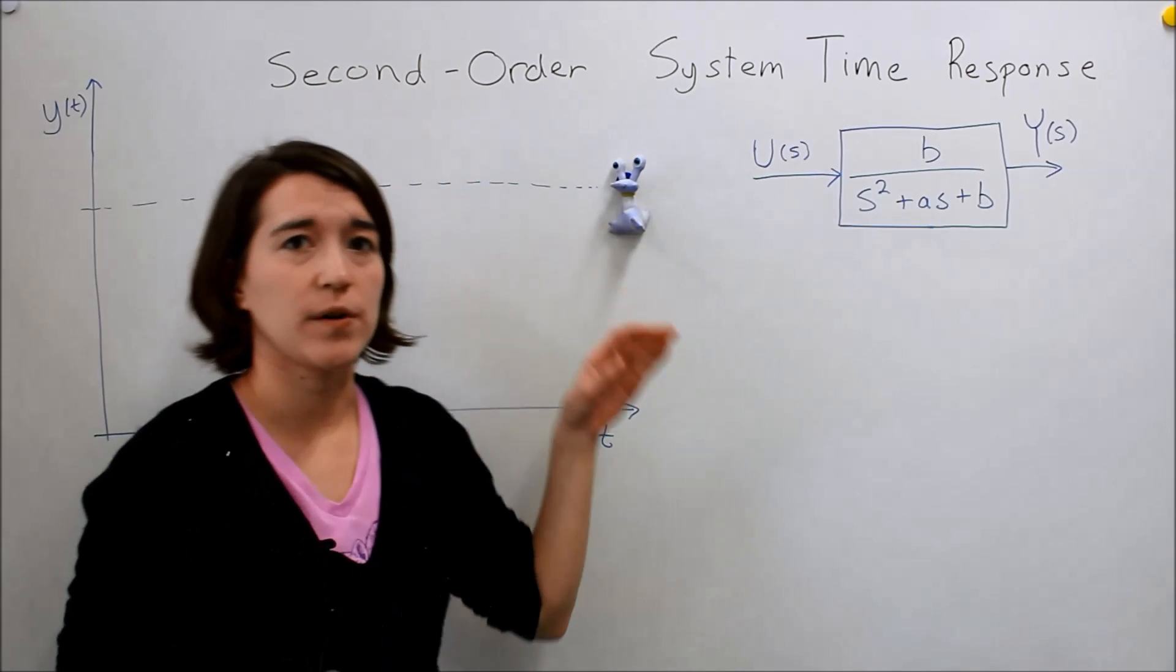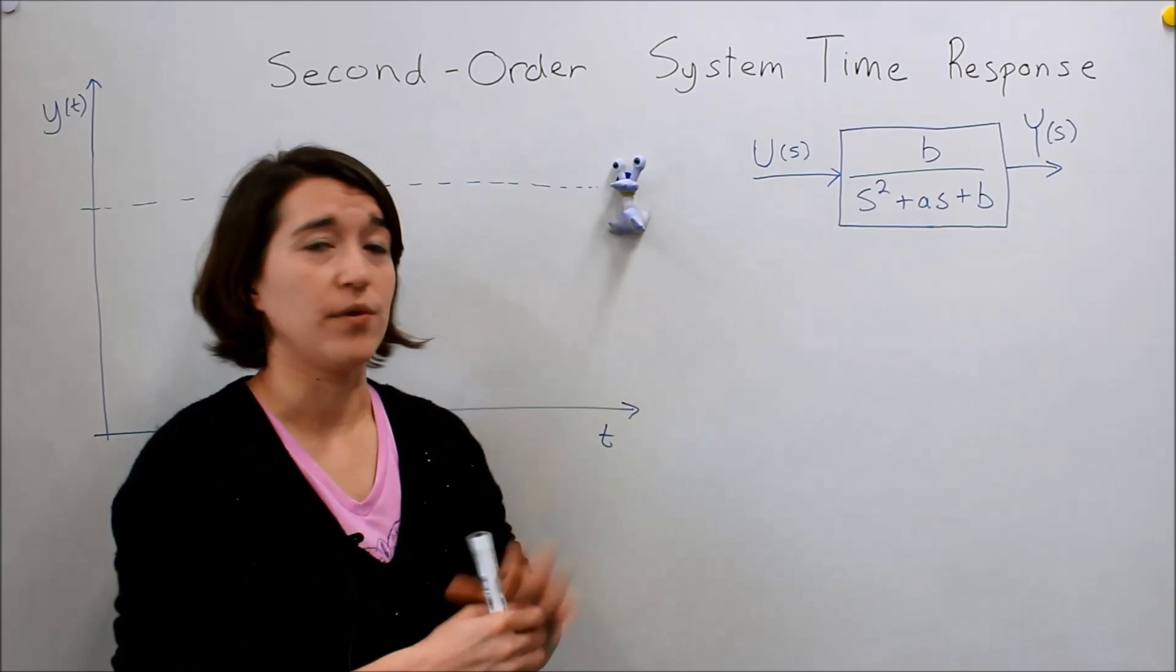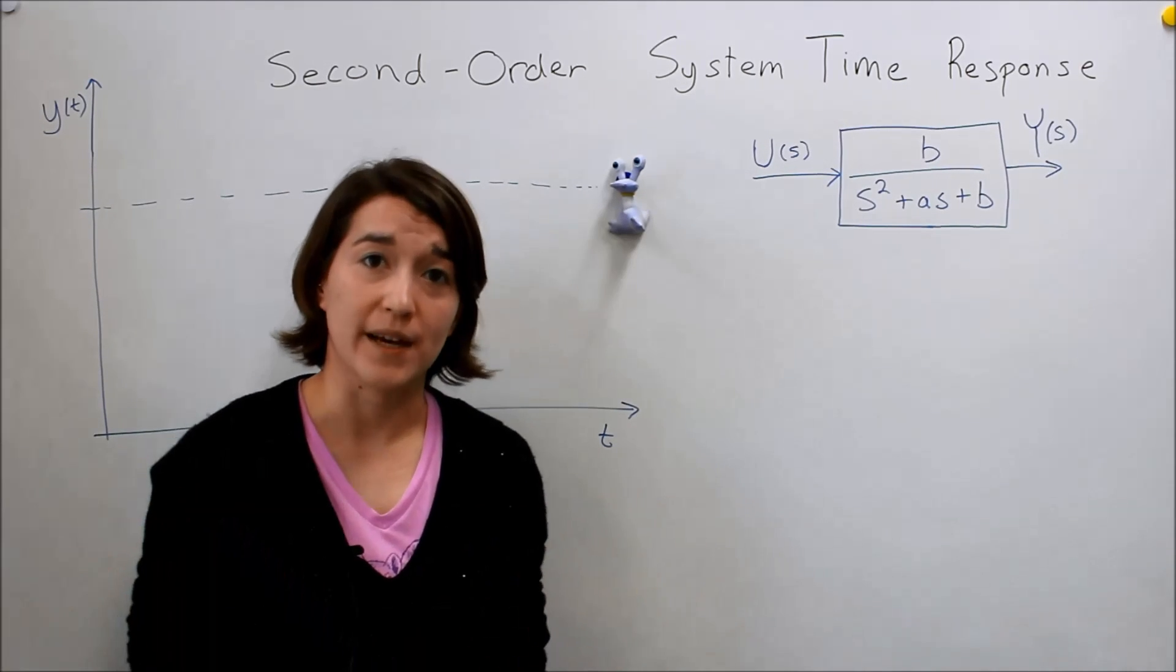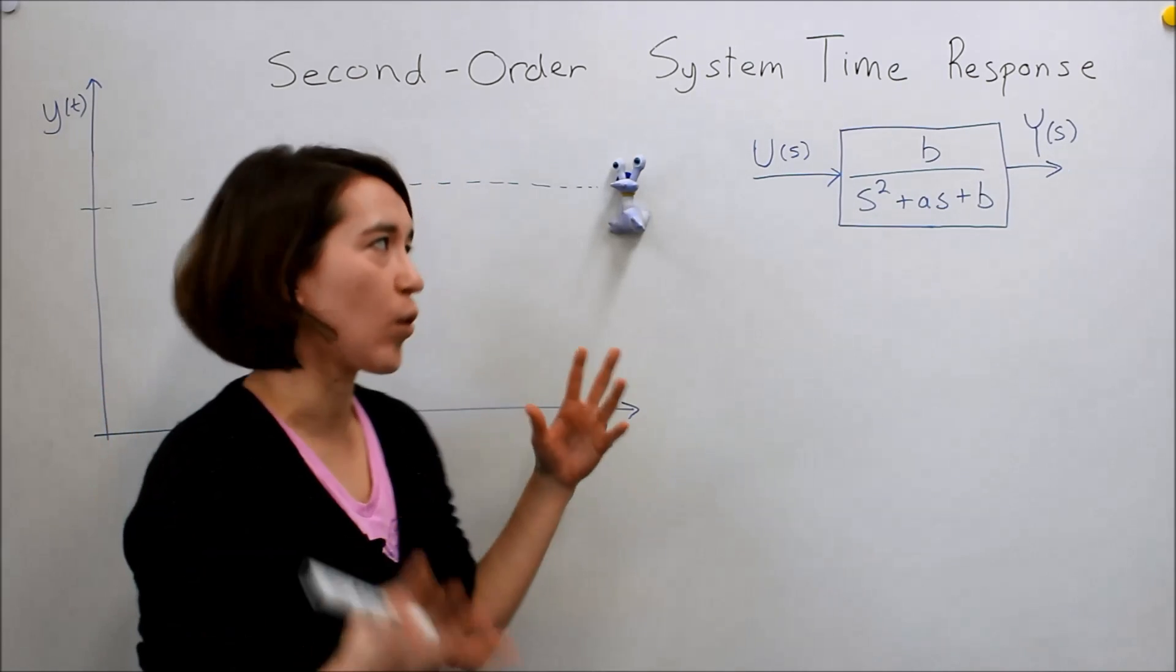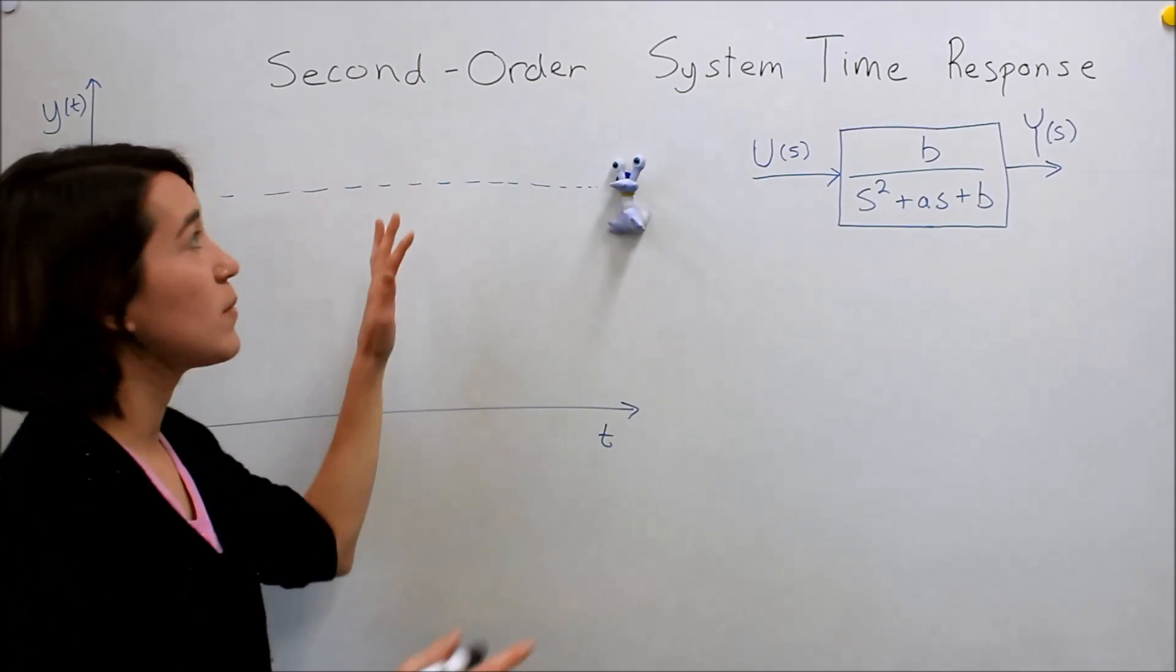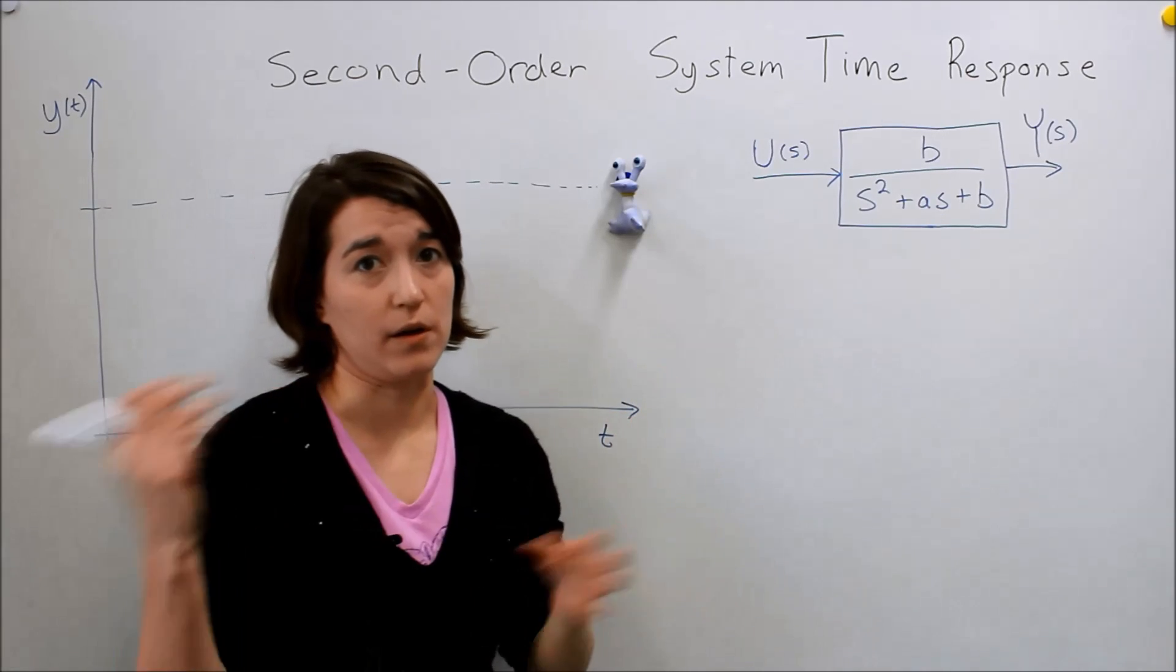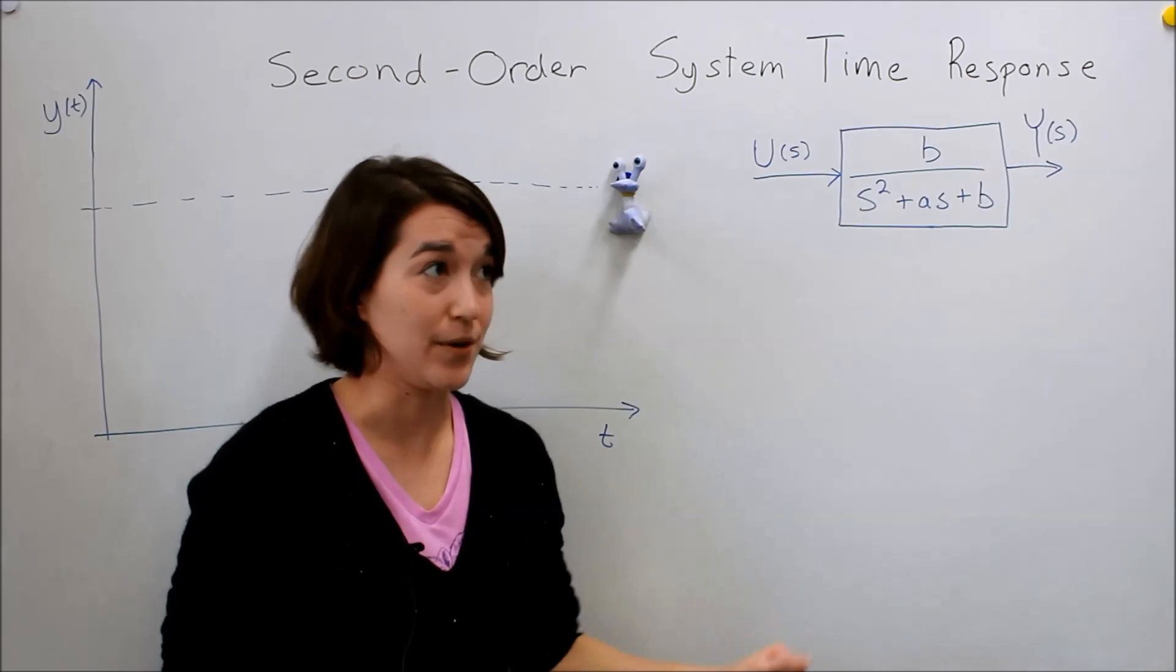Second-order systems are important because they're very well studied in the literature, so you can find lots of resources on them. And a lot of times if we have a more complex system, we're able to simplify the model into a second-order system that's more manageable for us. There's lots of good literature, the book that we use in this class and many other resources.